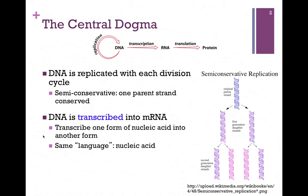First of all, DNA is replicated with each division cycle and that replication is semi-conservative. That is to say, one of the parent strands is conserved in each of the two new DNA molecules. In the figure on the bottom right, we have our DNA parent in blue. We separate each of those two strands and each will serve as a template to synthesize the complementary strand in pink. So again, that replication is semi-conservative.